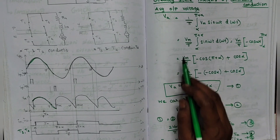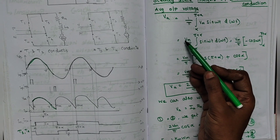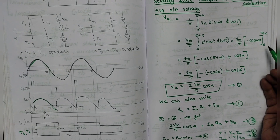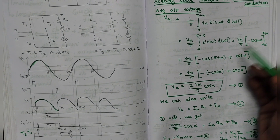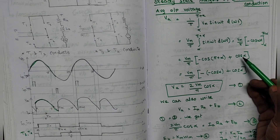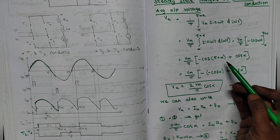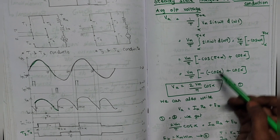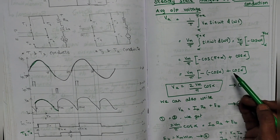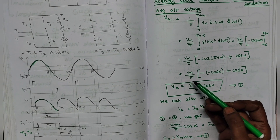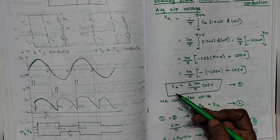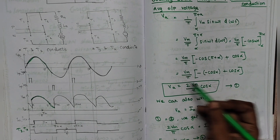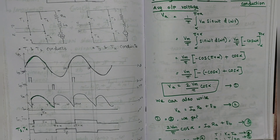The average output voltage is (1/π) times the integral from α to π + α of Vm·sin(ωt)·d(ωt). Vm is constant, so taking it out, the integral of sin(ωt) is −cos(ωt). Applying limits: substituting the upper limit π + α gives −cos(π + α) = cos(α), and subtracting the lower limit gives cos(α) + cos(α) = 2·cos(α). Therefore the average output voltage Va = (2·Vm/π)·cos(α). This equation is very important — many problems are based on it.